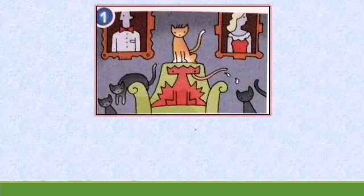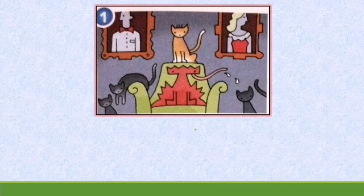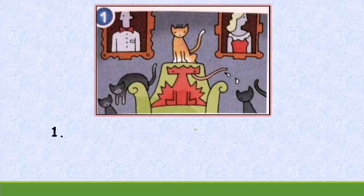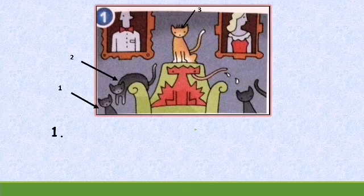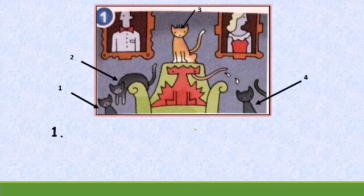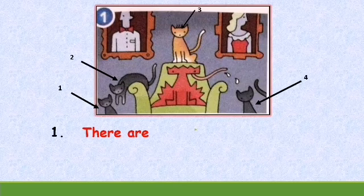First picture. Remember, to begin your sentences correctly, you need to look at the number of cats and monsters in the picture. First sentence: let's see how many cats there are. Let's count together — one, two, three, four. Four cats! Is it singular or plural? Plural nouns, right? So begin your sentence with 'there are': there are four cats.